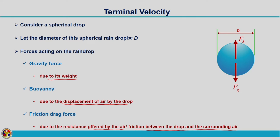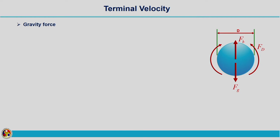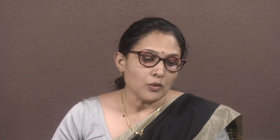So we are having totally three forces: gravity force, buoyant force, and drag force. We need the expressions for each. The expression for gravity force — it is actually the weight acting in the downward direction. Mass can be written in terms of density: mass equals density multiplied by volume of the drop. So gravity force fg equals ρw · g · (π/6) · d³, where ρw is the density of water and ρg is the specific weight.